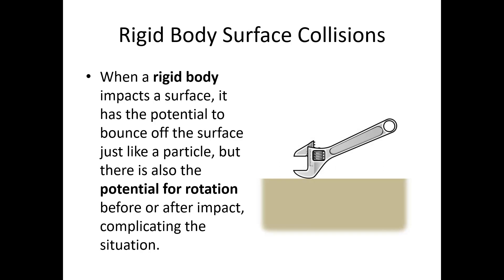Even if the wrench is going straight down before the impact, you can predict that after the impact it's going to bounce back up, but it's also going to be spinning after the impact. So although this looks fairly chaotic, we can predict post-impact velocities and angular velocities using our conservation of momentum equations as well as the idea of the coefficient of restitution.